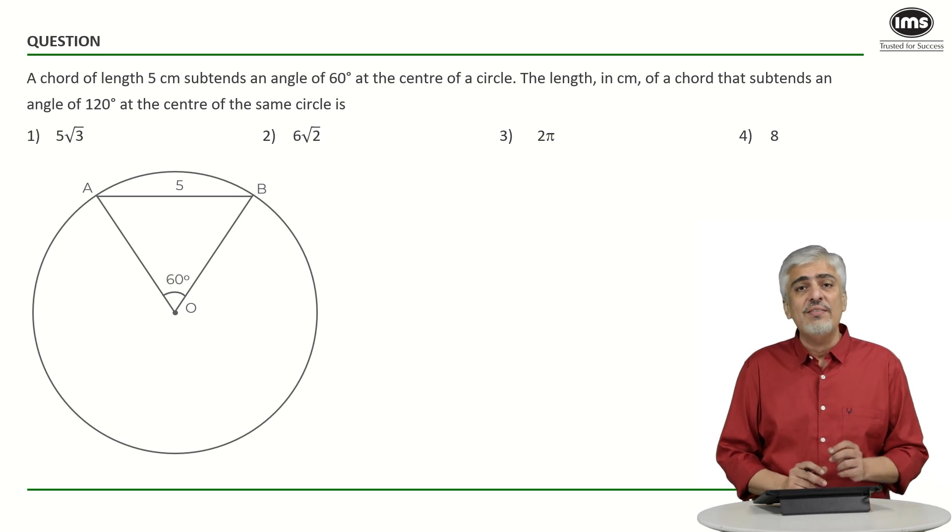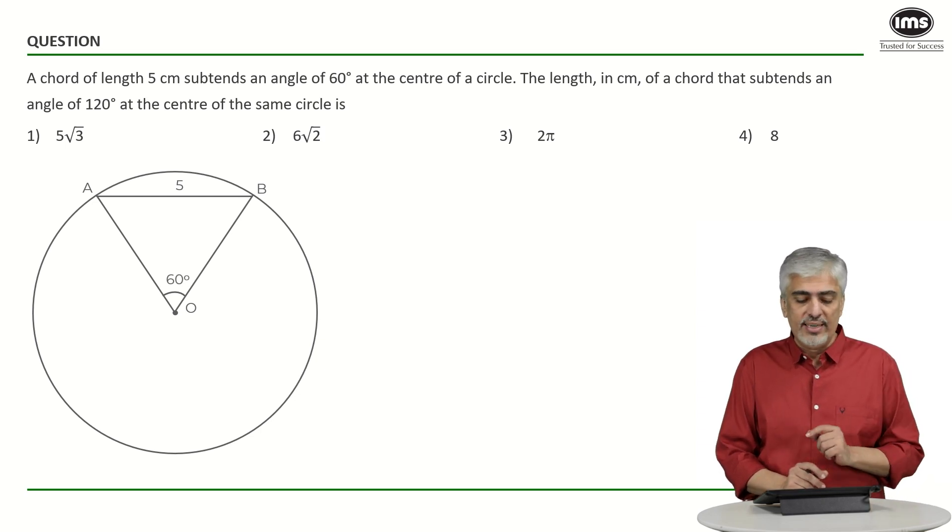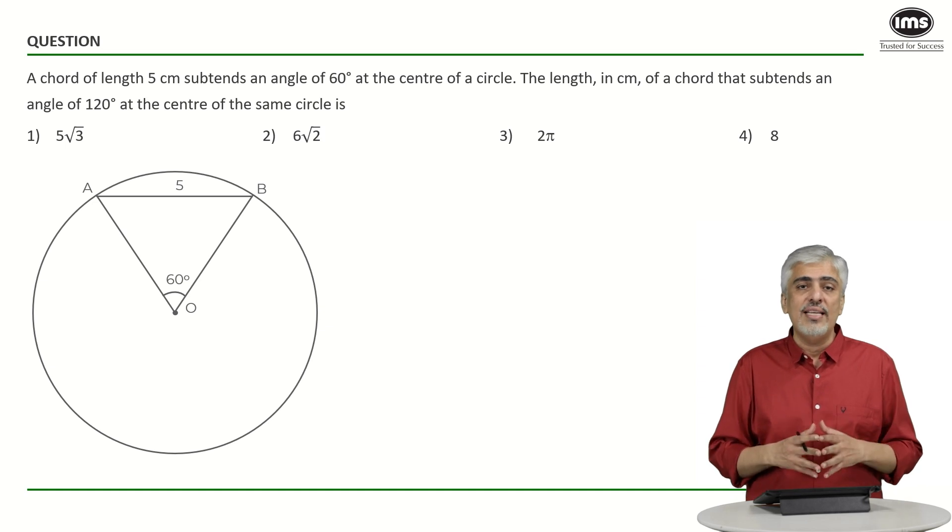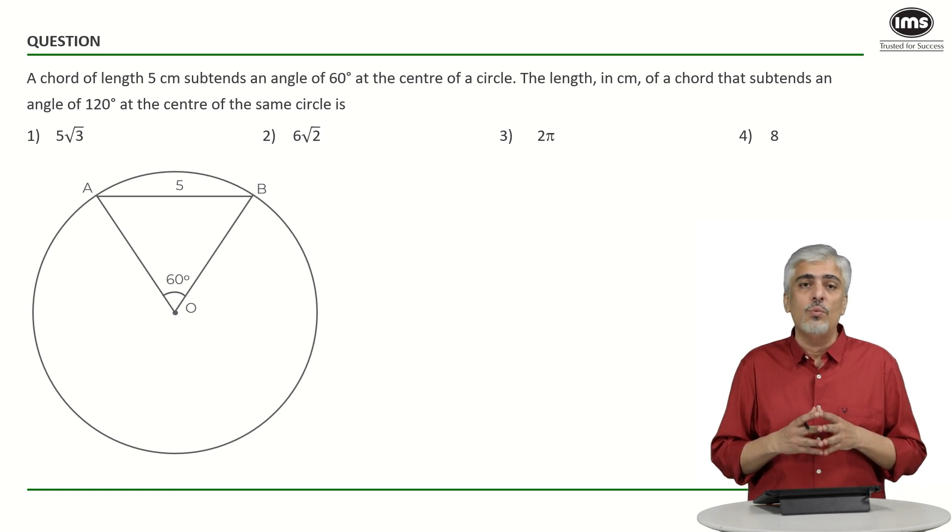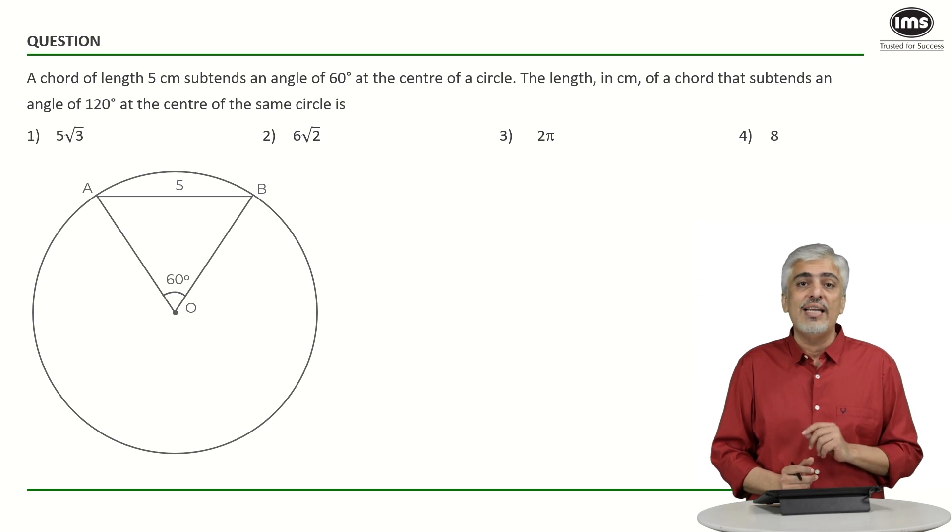So we got till here. What have they asked us to do? Then they're telling us the length in centimeters of chord that subtends angle of 120 degrees at the center of the same circle is how much? So now they're saying there's one more chord which subtends angle of 120 degrees at the center of the same circle. What would be the length of that chord?